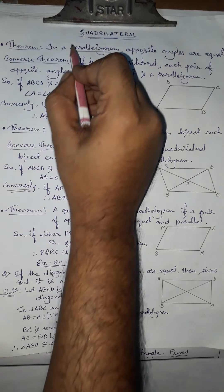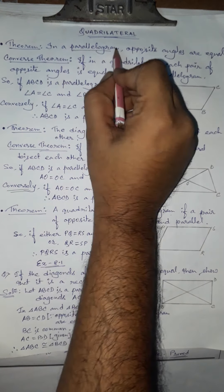The first theorem states that in a parallelogram, opposite angles are equal. So if a parallelogram is given, its opposite angles will always be equal. And its converse theorem — the converse means the statements are just opposite — states that if in a quadrilateral each pair of opposite angles is equal, then it is a parallelogram.